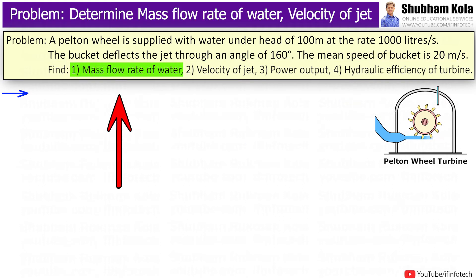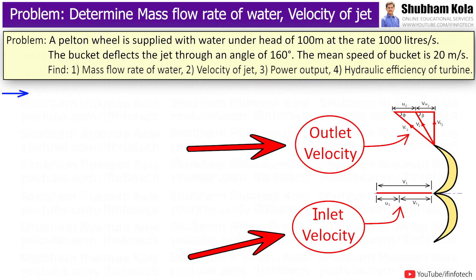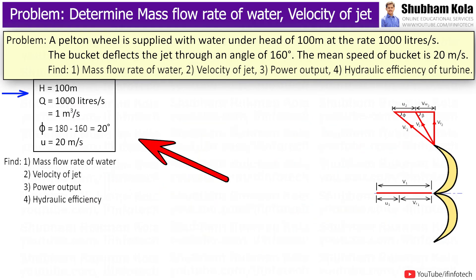Find mass flow rate of water, velocity of jet, power output, and hydraulic efficiency of turbine. Before going to solve this numerical, first I will draw inlet and outlet velocity triangles of pelton wheel and write the given data provided.